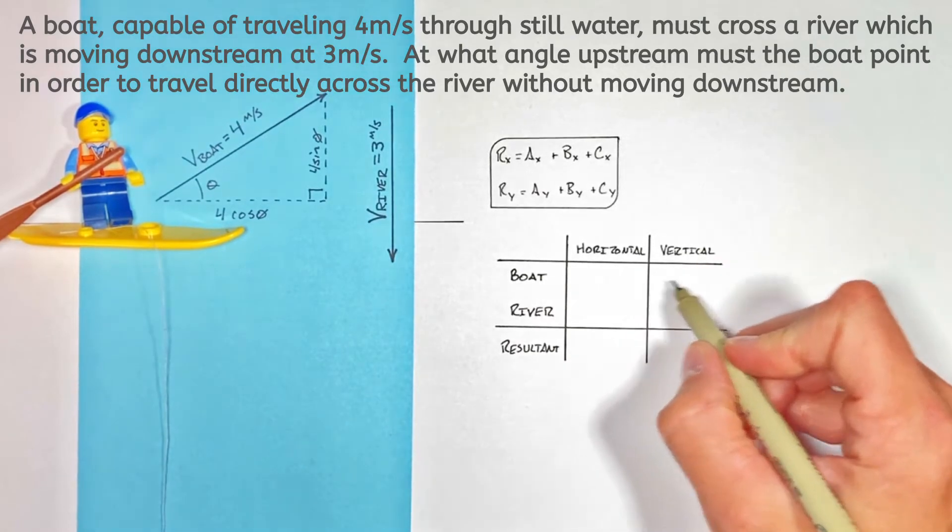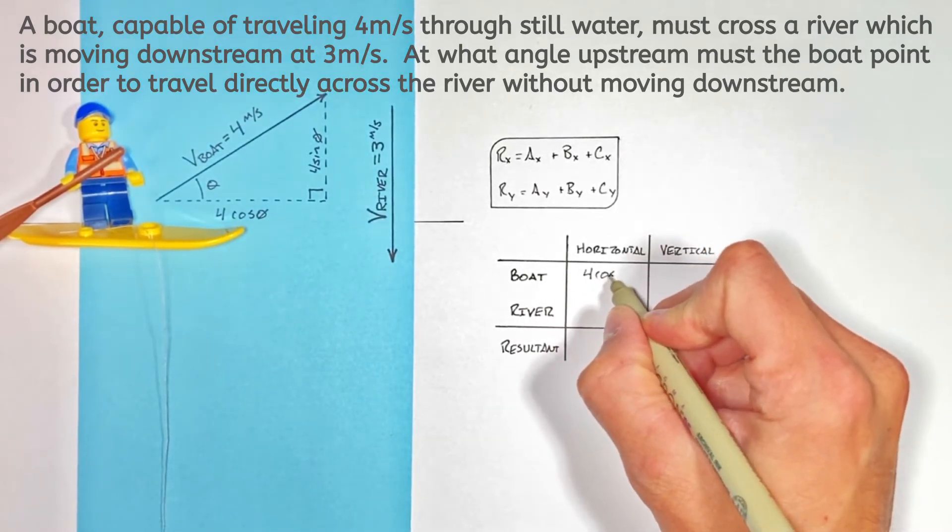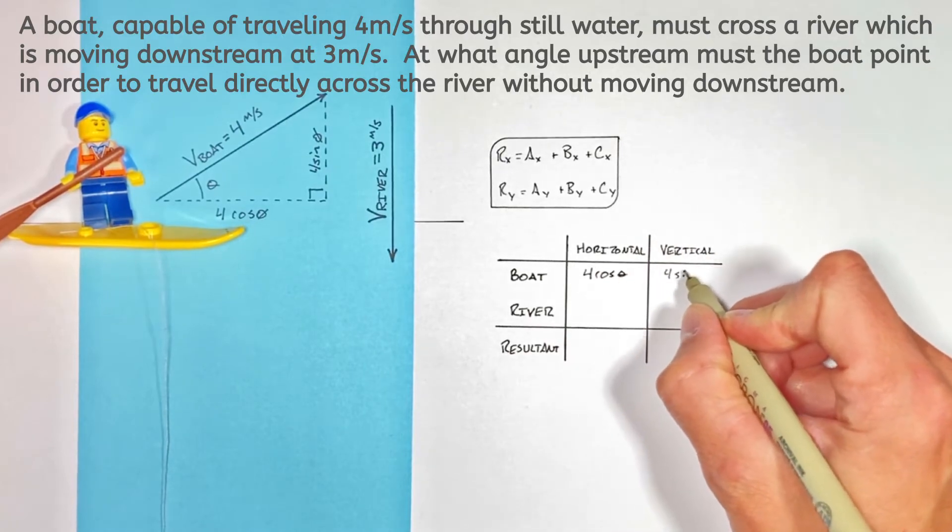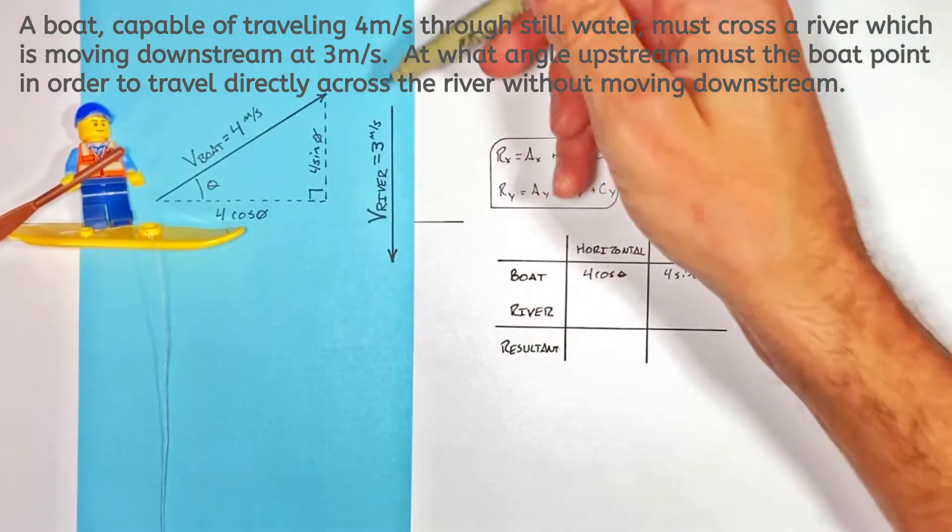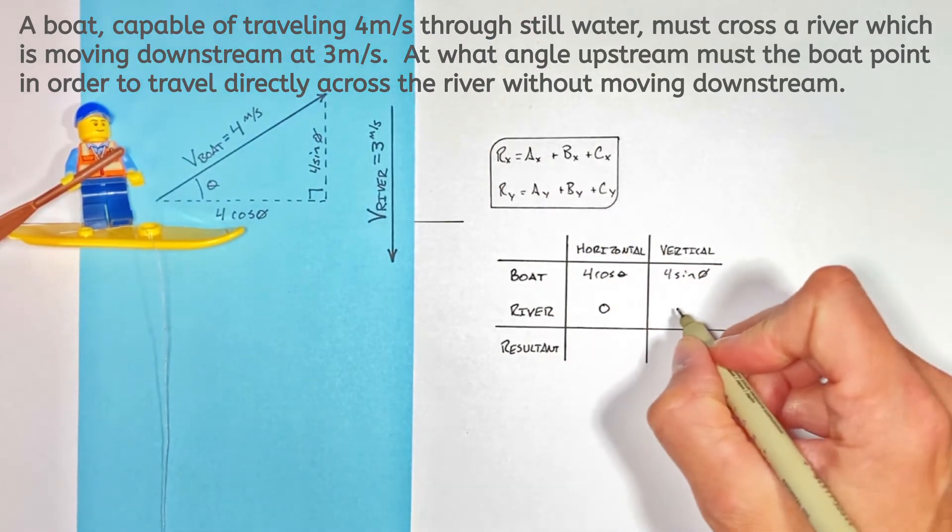So while we can't put in actual numbers here, we can put in equations: 4cosθ and 4sinθ. Now, we know the river is going to flow downstream here, so it has no horizontal component and a vertical component of 3.